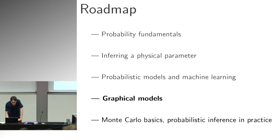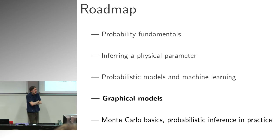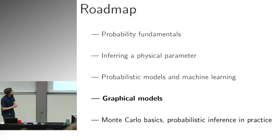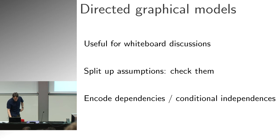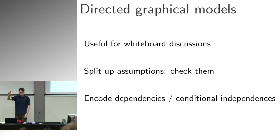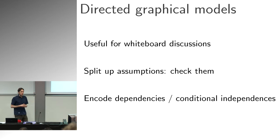I want to get on to Monte Carlo, but I'll show you a few more basics about graphical models because it's worth having some intuitions about them. Daphne Koller's book is very thick — there's a lot to know about graphical models. They're useful for splitting up computation, and there's a marriage between computer science, graph theory, and statistics. To be honest, I don't use much of that theory day to day.